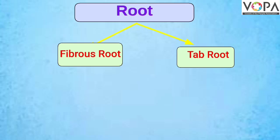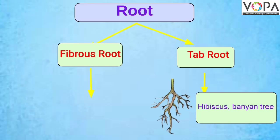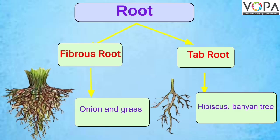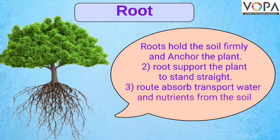Tap root is found in hibiscus and in the banyan tree. Fibrous root is present in onion and in grass. The main functions of the roots are to hold the soil firmly and anchor the plant, or we can say that roots support the plant to stand straight. The main function of the root is also to absorb and transport water and nutrients from the soil.